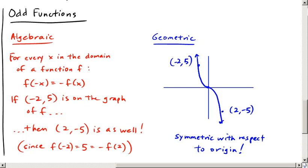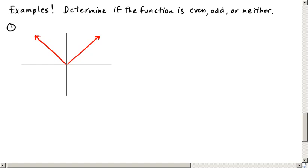All right, so let's try some examples. Let's determine if the function that's being shown is either even, odd, or neither. So here's the function f. And so this one, again, you can see it's symmetric with respect to the y-axis. And so this is an example of an even function.